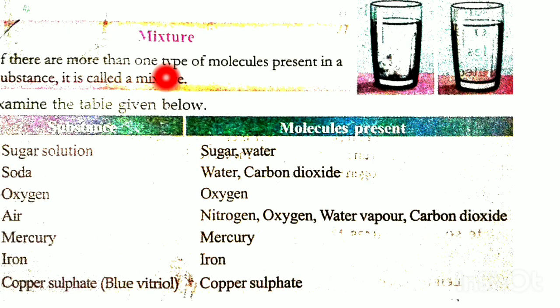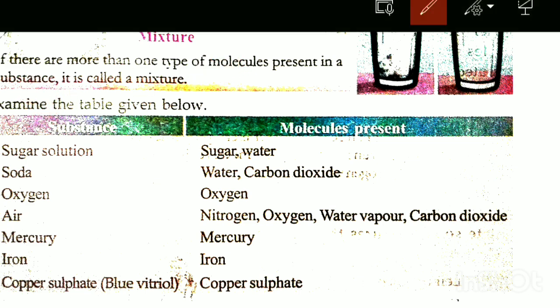Here is another mixture. If there are more than one type of molecules, it is called a mixture. A mixture can have more than one type of molecules mixed together.